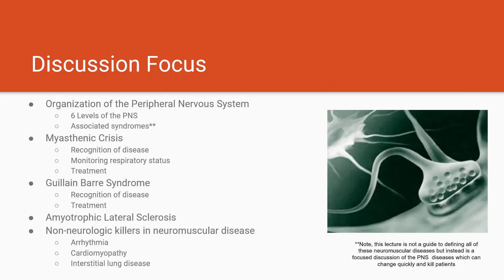In this lecture we're going to be discussing the neuromuscular diseases that can kill a person quickly. Neuromuscular medicine is a very large field, but here I just want to talk about the patients who can get sick and get sick quickly and will need to be addressed inpatient. Specifically I'm going to be focusing on two diseases: myasthenia gravis and Guillain-Barré, and after that I'll touch on ALS and mention a couple other killers in neuromuscular medicine.